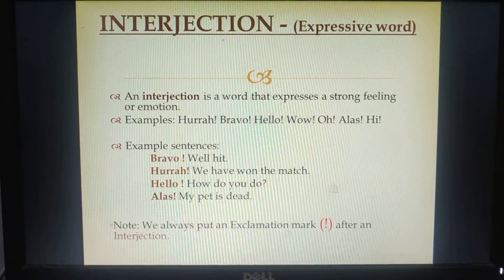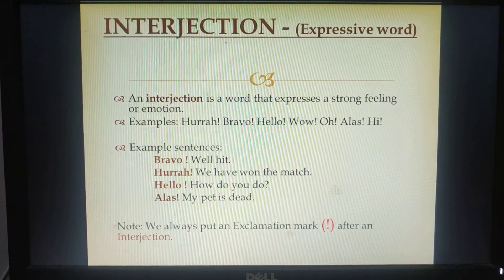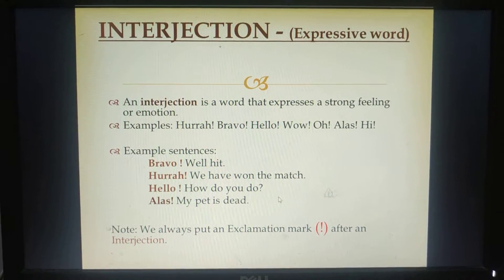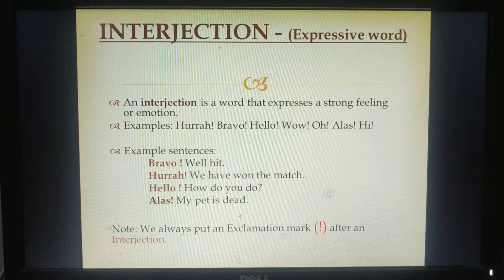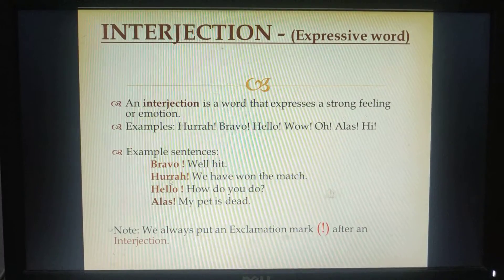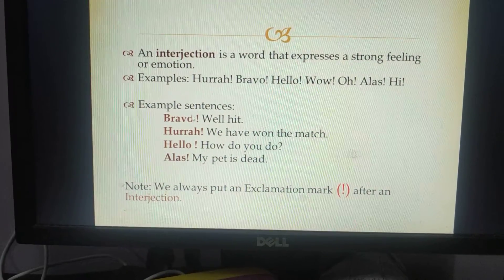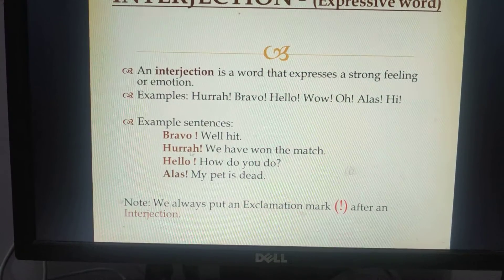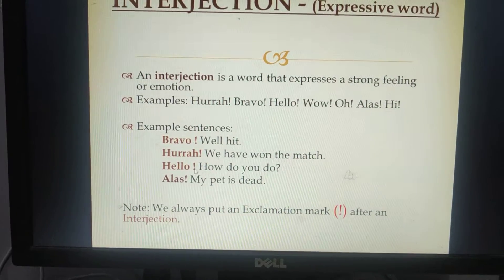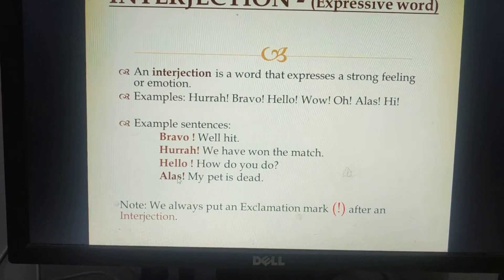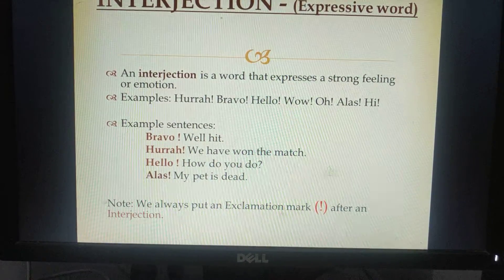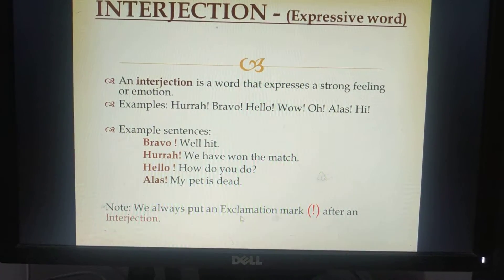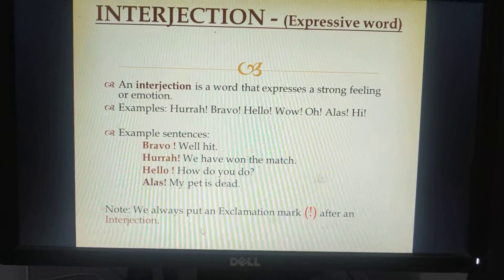Let's see how these examples are used in framing sentences. The first example is, bravo, well hit! Hooray, we have won the match! Hello, how do you do? Alas, my pet is dead. These words bravo, hooray, hello, alas express sudden praise, peace, joy, pleasure, or in the case of alas, sudden grief or pain. You have to keep in mind that we always put an exclamation mark after an interjection.